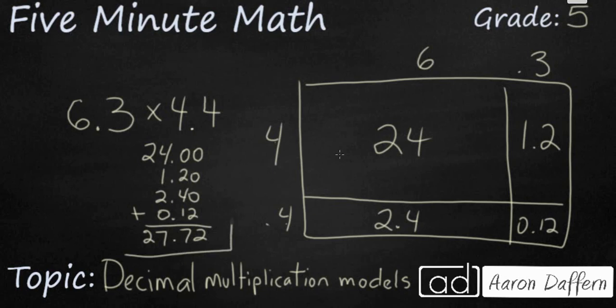Then you add it all up, make sure every number goes to the hundredths place, and you get 27 and 72 hundredths.